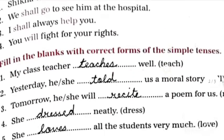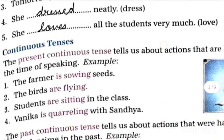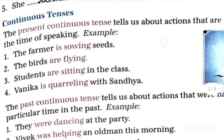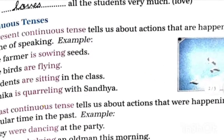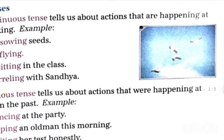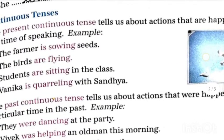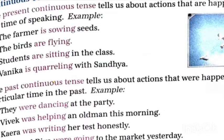Now the continuous tenses. The present continuous tense tells us about actions that are happening at the time of speaking. For example: 'The farmer is sowing seeds,' 'the birds are flying,' 'students are sitting,' and 'Vanika is quarrelling with Sandhya.'